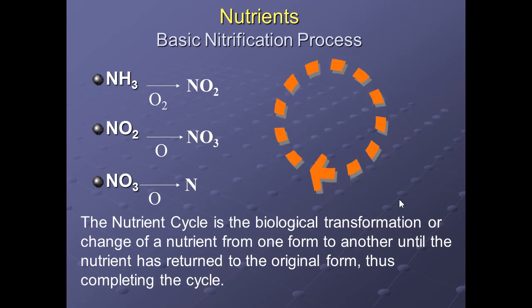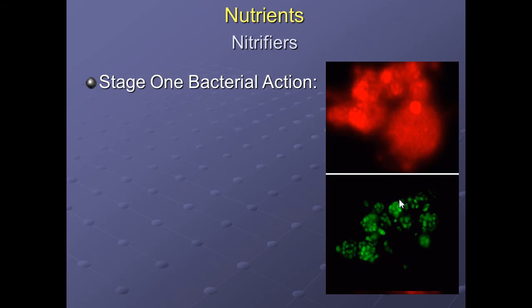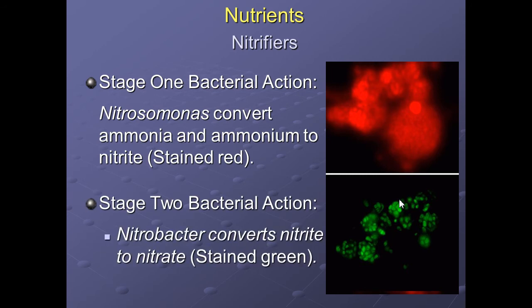There are two types of nitrifying bacteria. The first are Nitrosomonas, which convert ammonia and ammonium to nitrite. The second are Nitrobacter, which convert nitrites to nitrates.